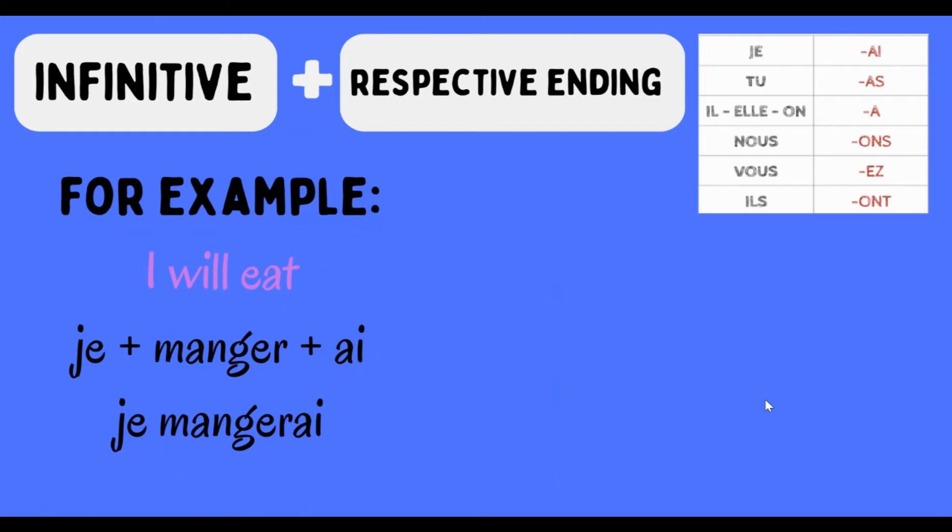So let's look at an example. If you wanted to say I will eat, remember you've got the pronoun je, the infinitive manger, and the respective ending which for je is -ai. So je mangerai - that's how you say I will eat.